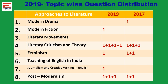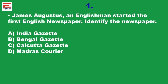Now, let's enter into the questions. This is one of the questions: James Augustus, an Englishman, started the first English newspaper in India. The options are Indian Gazette, Bengal Gazette, Kolkata Gazette, Madras Korea. The given answer is Bengal Gazette. This is the only question related to journalism and the newspaper.